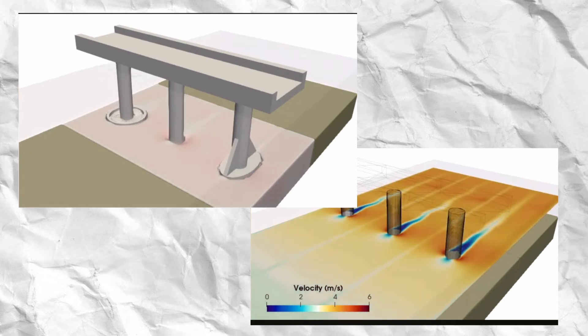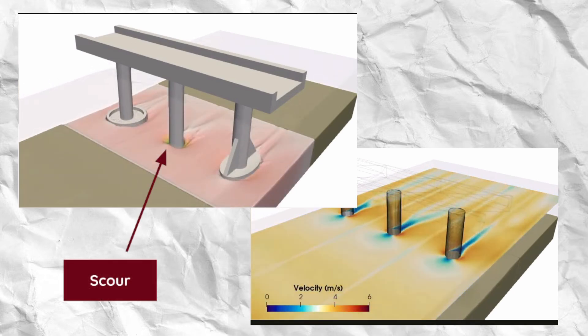Scour, or when fast-moving water, usually in rivers, erodes the sediment that surrounds the base and supports bridges, is one of the three main causes of bridge failure. It has been estimated that 60% of all bridge failures are caused by scour or other water-related causes.